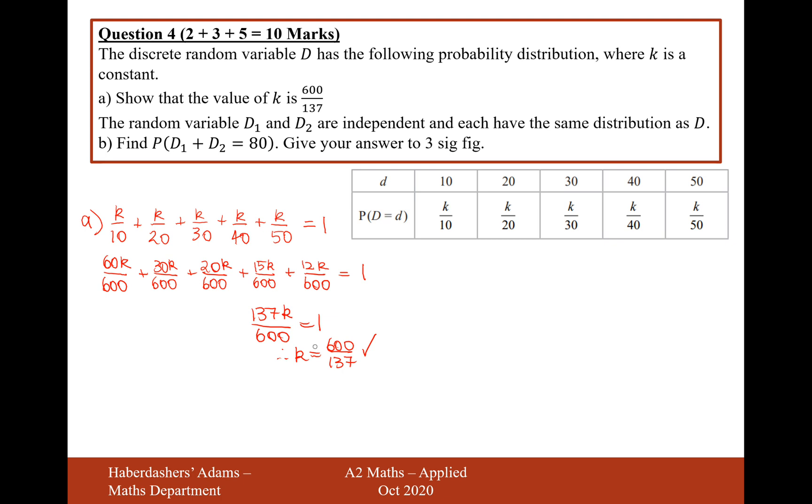So show that question. Make sure you've got lots of detail in your answer. The random variable D1 and D2 are independent and each have the same distribution as D. Find the probability of D1 add D2 equals 80. Give your answer to three significant figures. So what's the number of different ways that we can get 80 from two scores of this D distribution?